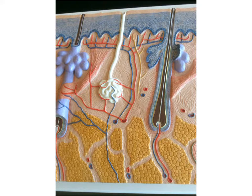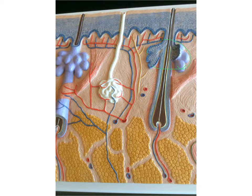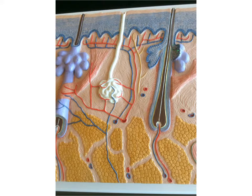Other structures we can see on the dermis include your sweat gland and your sebaceous gland. The sweat gland has a duct because it produces a watery secretion — your sweat — and carries it all the way up to the surface of your skin through this duct. The opening where the sweat comes out is the sweat pore. The sebaceous gland also contains ducts, and they release an oily content to your hair, which is why sometimes we have oily hair.